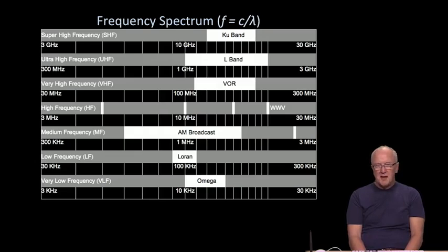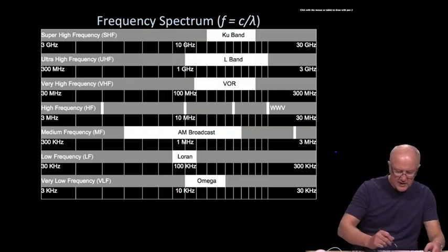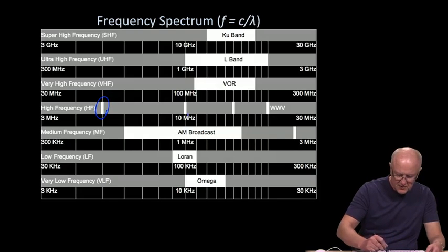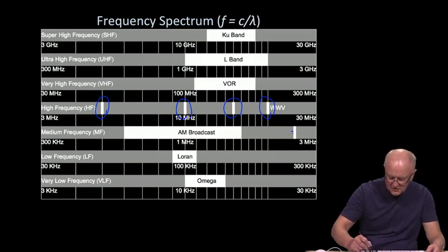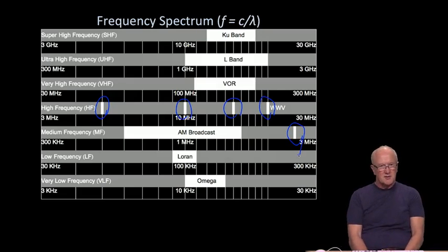If we go up one band from LF we get to medium frequency. Medium frequency is perhaps best known for AM broadcast in the middle. High frequency very popular with radio amateurs who are trying to transmit signals great distances. The white little bands within the high frequency actually belong to a service called WWV which is a service used to transmit time, transmit information about time nationwide here in the US.